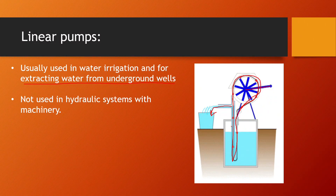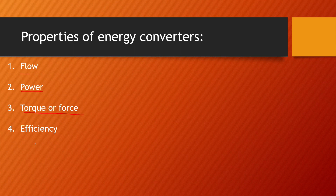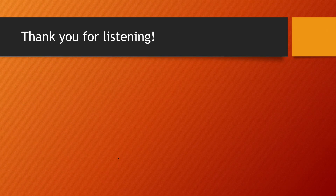Linear pumps are not very good — they can get stuck, have reliability problems, and are just not suitable for hydraulic systems, which work with high pressure and high RPM. In our next lesson we're going to talk about properties of energy converters. Because energy converters convert energy, we need to discuss energy indicators and properties such as flow, power, torque or force (for linear moving hydraulic motors or pumps), and efficiency. We'll cover the basic math behind these energy properties and explain them in more detail.